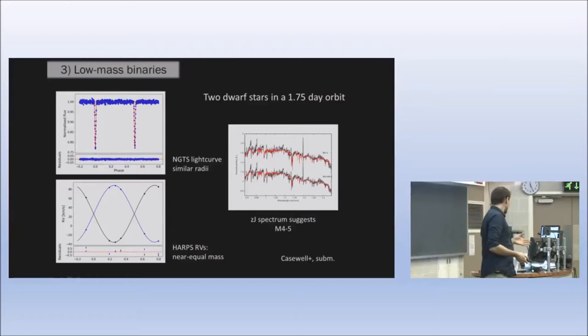Finally, NGTS can do much more than just exoplanets. NGTS covers 10% of the southern sky with high precision. We can study, for example, these low mass binaries in more detail, which are very similar to exoplanets but can give us a lot of insight into the stellar physics happening here.